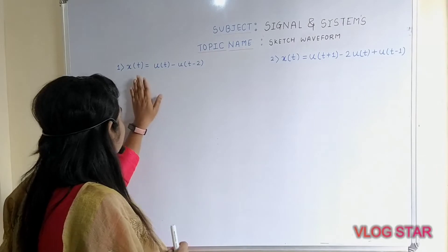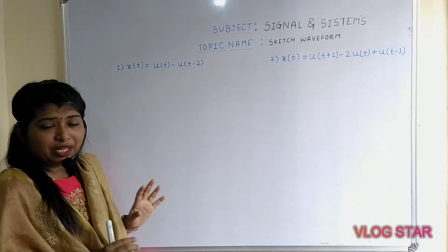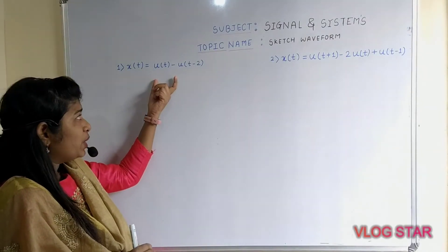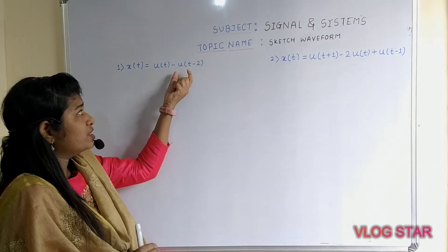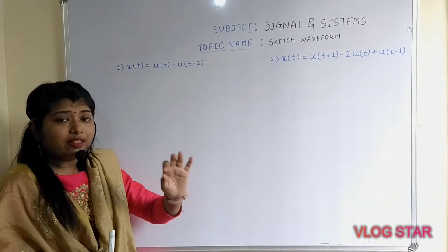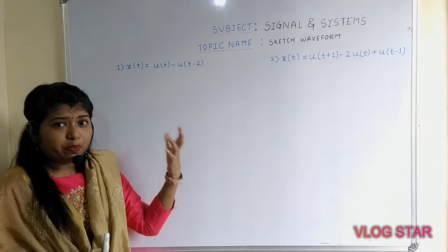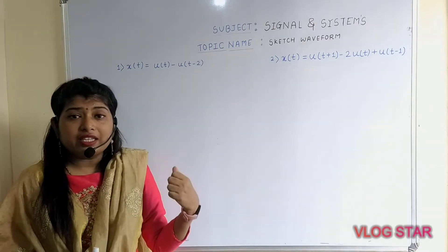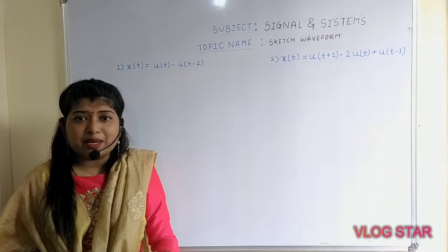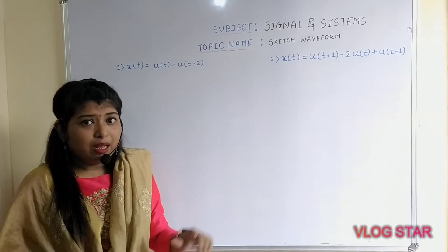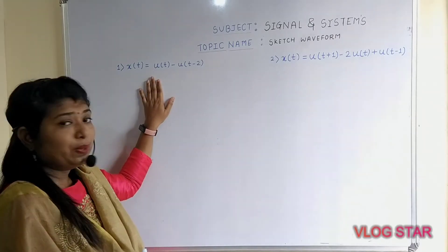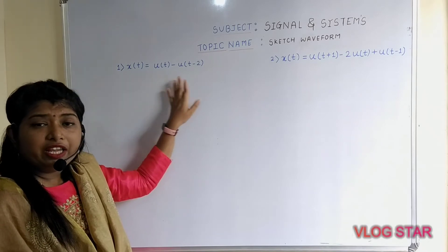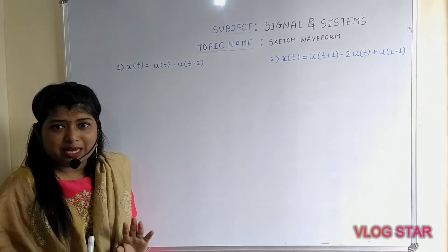Observe this particular equation. The equation given is: x(t) = u(t) − u(t − 2). The first step you need to perform is to identify whether the given signal is a continuous time signal or a discrete time signal. By looking at this equation, you can easily identify that it is a continuous time signal.